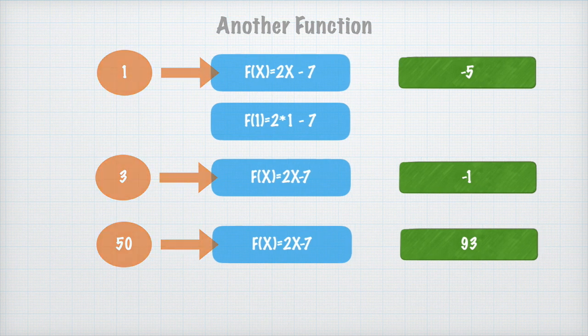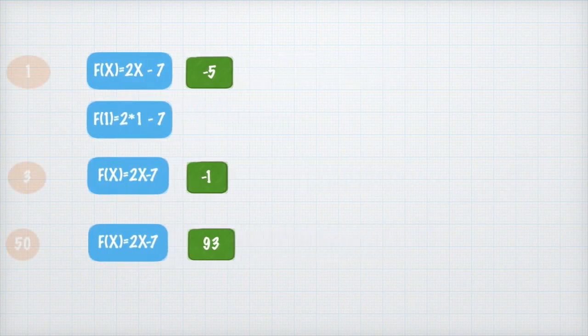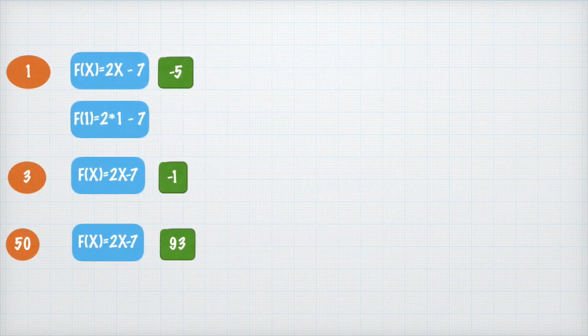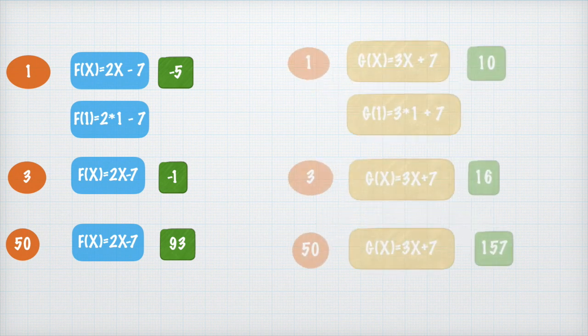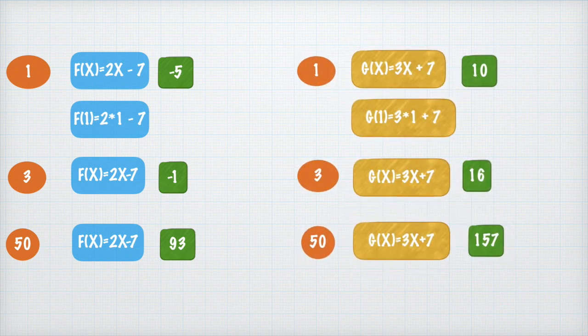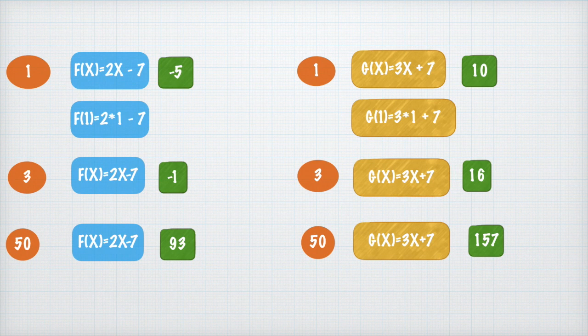Sometimes you might also have two functions at the same time. Let's say f(x) = 2x - 7 and then the other function is g(x) = 3x + 7. Try it for yourself: find the value of g(1), find the value of g(3), and find the value of g(50). See whether the values that I have given are correct or not. Hit pause and try to find the value of g(1), g(3), and g(50). So this part of functions was fairly easy.